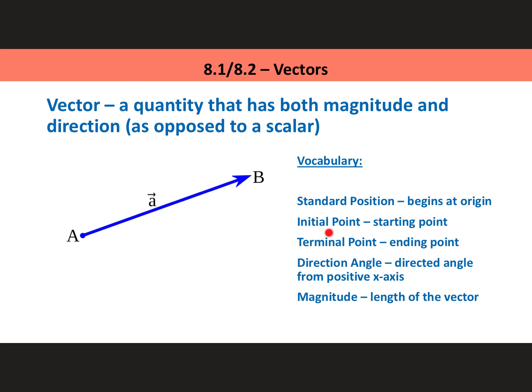The initial point is the starting point. The terminal point on my vector here, point B, is the ending point. The direction angle is the directed angle from the positive x-axis, which is how we have counted angles in the past. That's how we counted our angles on the unit circle. We started measuring how wide the angle was at the positive x-axis.